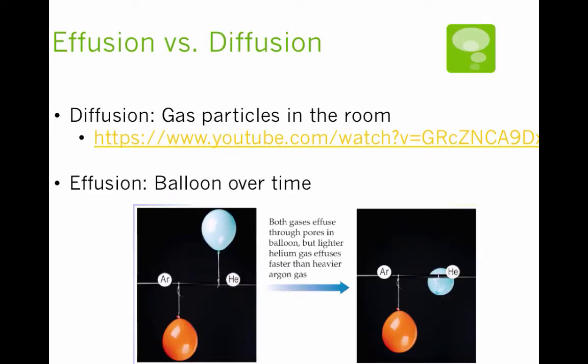So now what we're going to do is we're going to look at effusion versus diffusion. Diffusion is looking at how gas particles mix with each other. If something diffuses well, that means it mixes well. So you can think about gas particles in a room. Effusion with an E is how gases escape through a small pinhole. So if we look at this balloon over time, both gases effuse through small pinholes, but the lighter gas actually effuses faster.